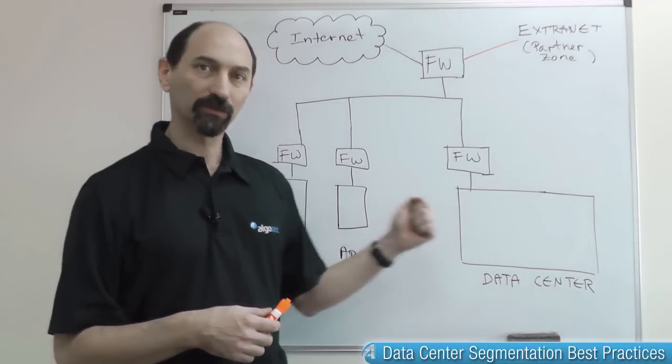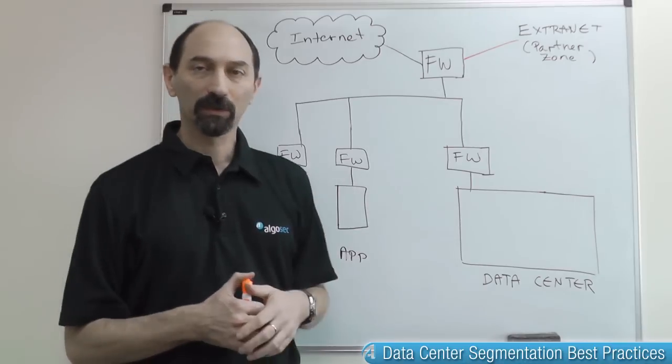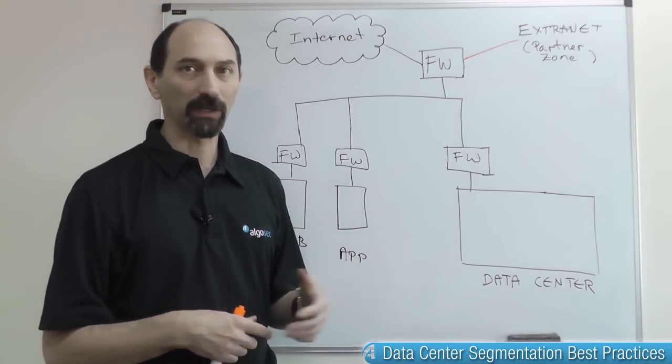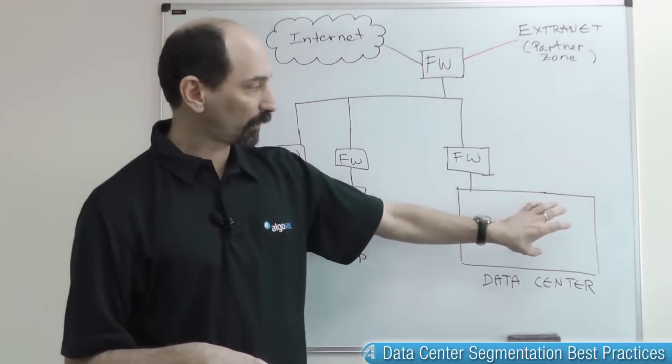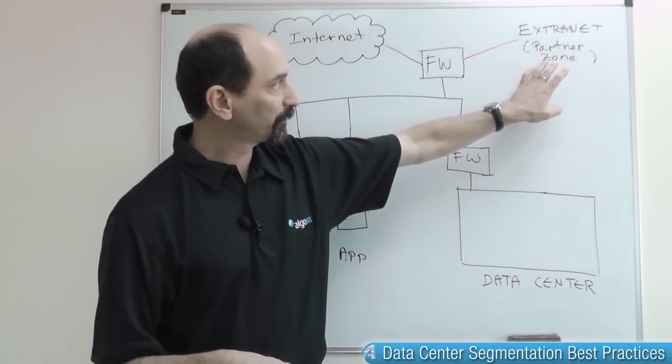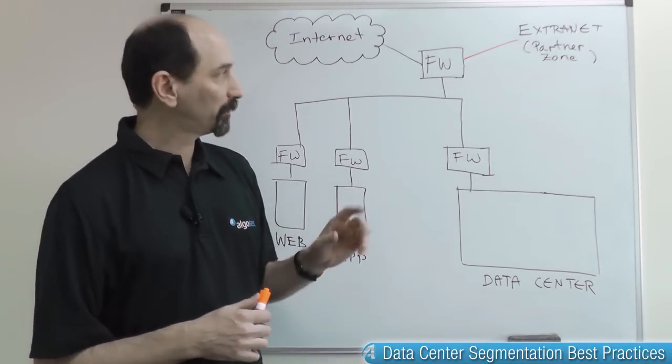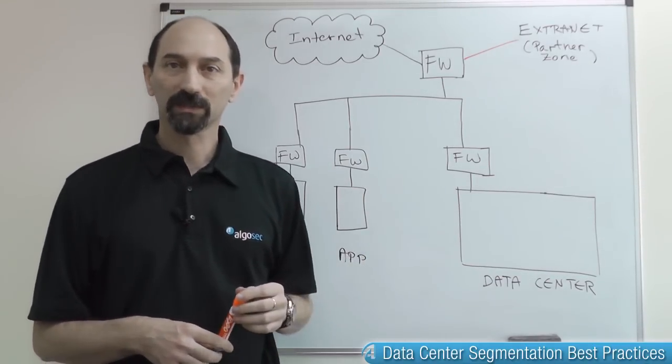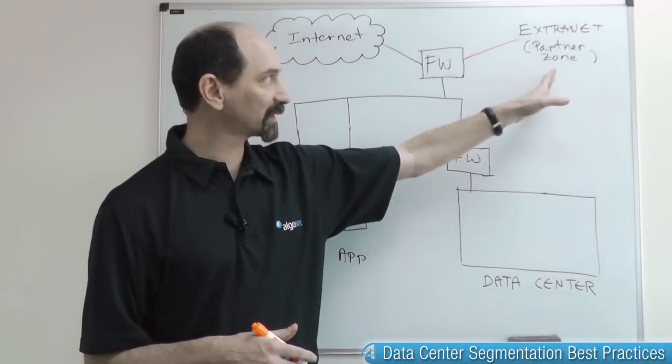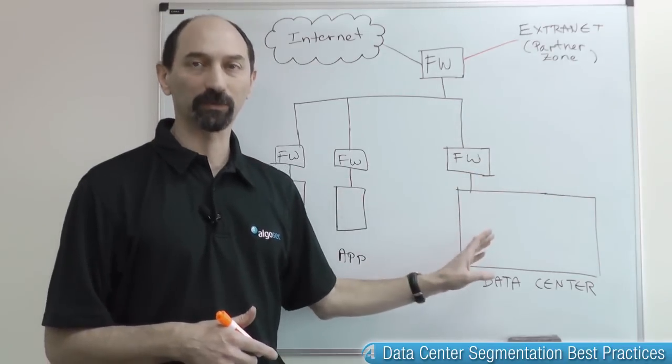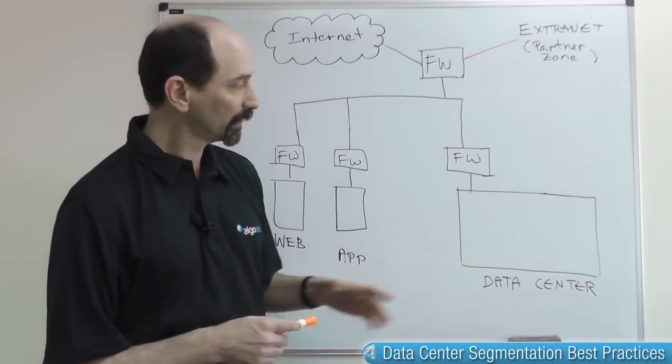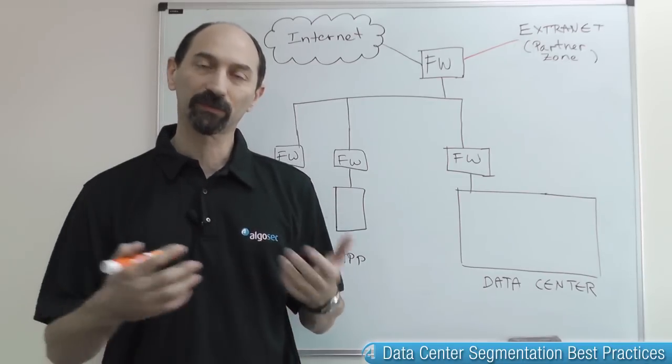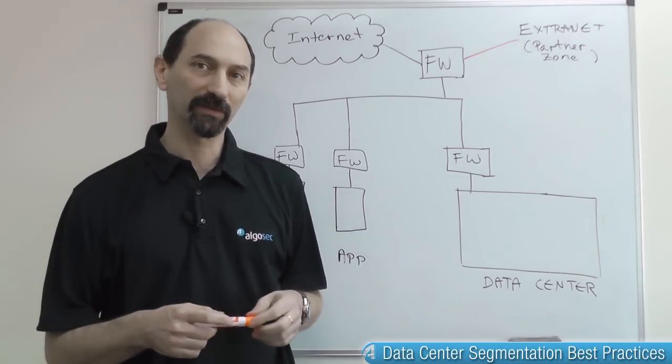For instance, credit card information coming from your shopping application might be subject to PCI compliance, whereas data provided to your partner should not be able to access the PCI zone. So how do you reorganize your data center to reflect the different security levels that you have inside it?